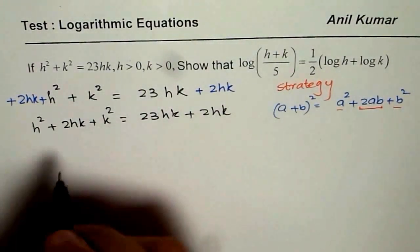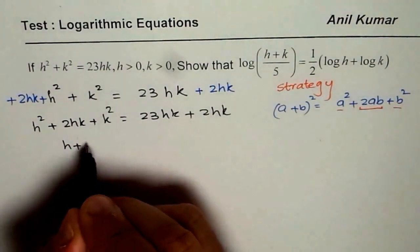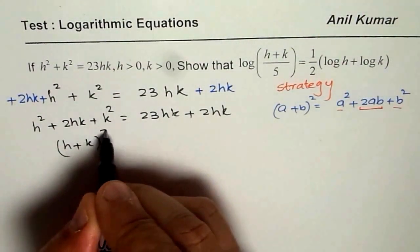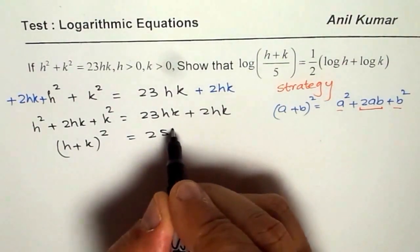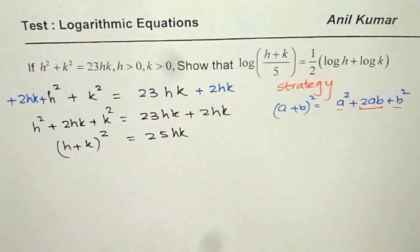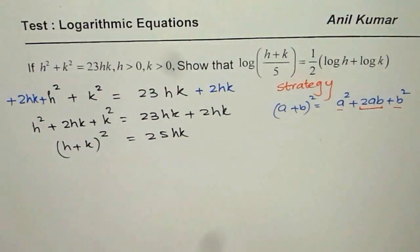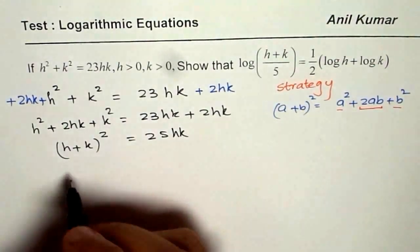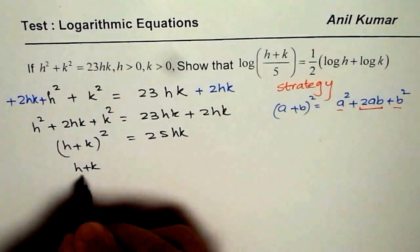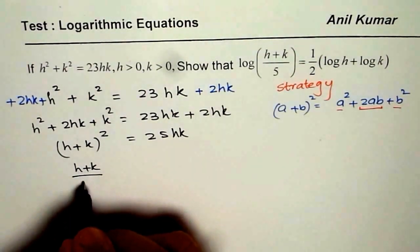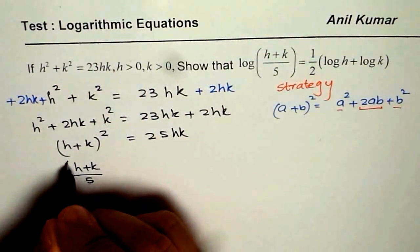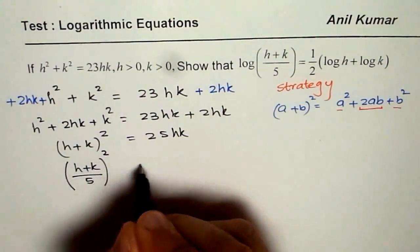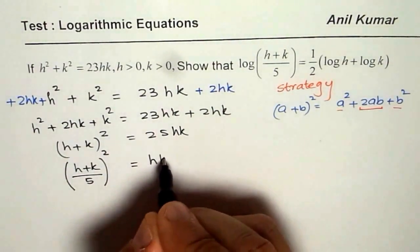As soon as I do that, I get (h+k)² on this side and 25hk on the right side. Perfect. 25 is 5². Let's bring this 25 on this side. So we get (h+k) over, or I could write 5 if that is okay for you, equals to hk.